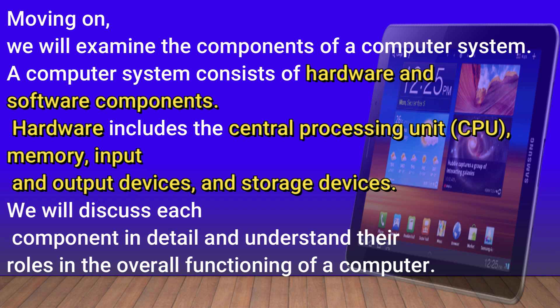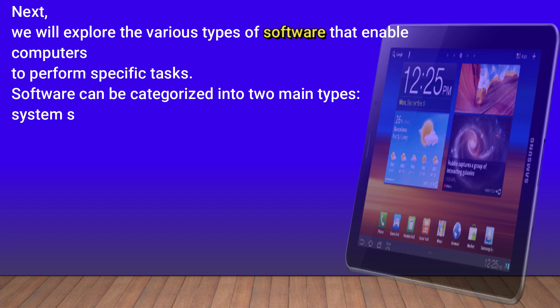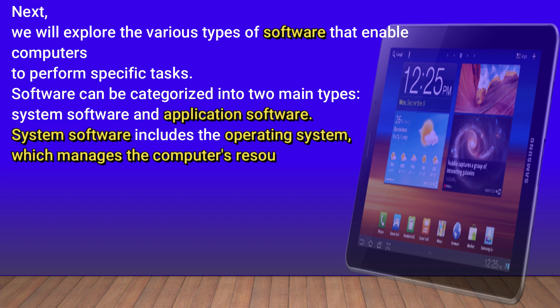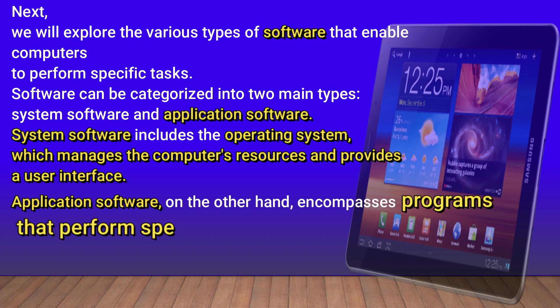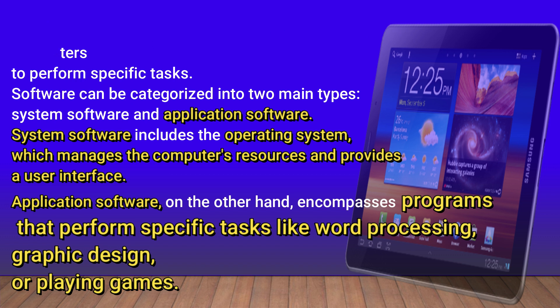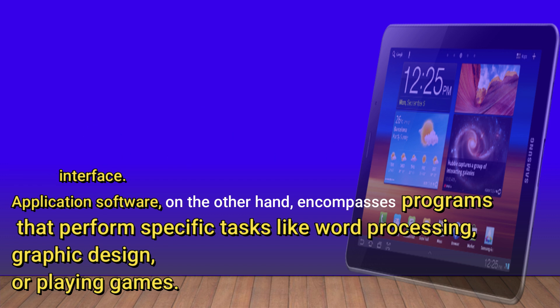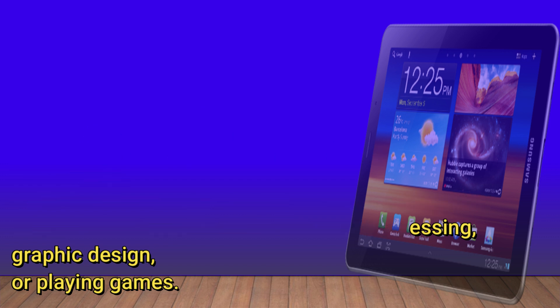We will discuss each component in detail and understand their roles in the overall functioning of a computer. Next, we will explore the various types of software that enable computers to perform specific tasks. Software can be categorized into two main types: system software and application software. System software includes the operating system, which manages the computer's resources and provides a user interface. Application software, on the other hand, encompasses programs that perform specific tasks like word processing, graphic design, or playing games.